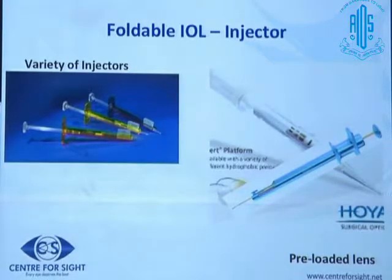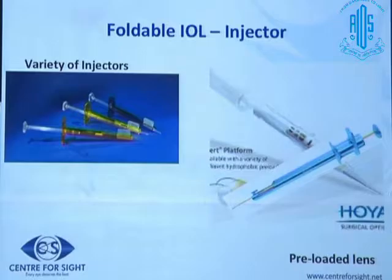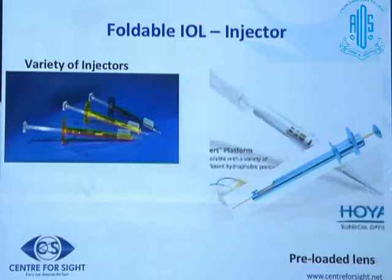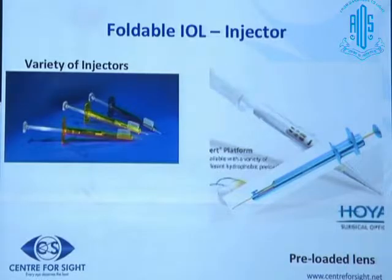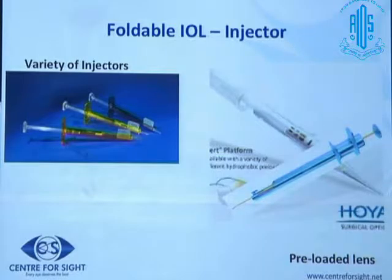In phacoemulsification, you are able to remove a cataract through a small incision, so the intent is to put the lens through that same small incision. We are not talking about PMMA lenses, which some people may want to implant because of cost, but rather lenses which can be folded and inserted through the same incision without needing to enlarge it.